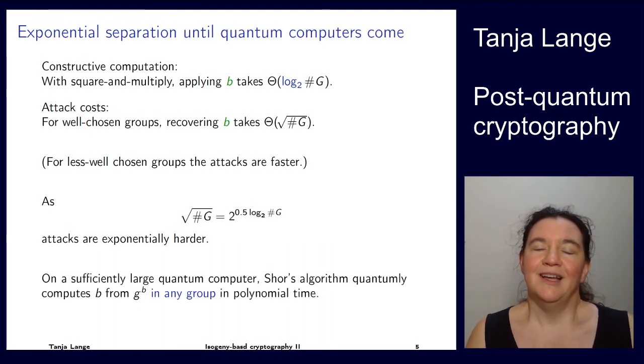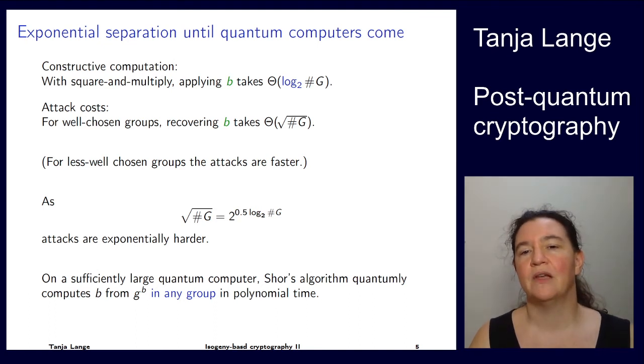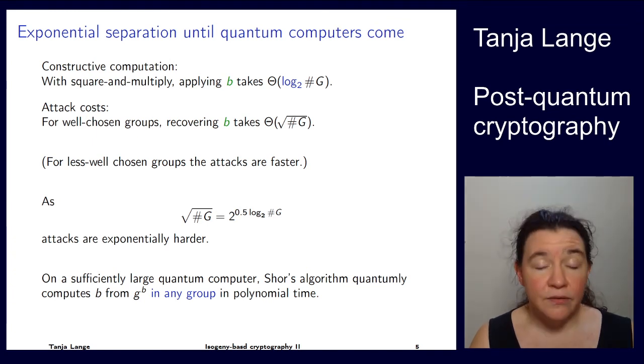Only under quantum computers can, so as you've seen in the previous lectures, so that's the Shor algorithm for RSA, exercise sheet one, and also the Simons algorithm lecture, they can see that Shor's algorithm actually on a sufficiently large quantum computer, so that's a big caveat. But once there is a sufficiently big quantum computer, it can compute B from G to the B in polynomial time. That's not good.